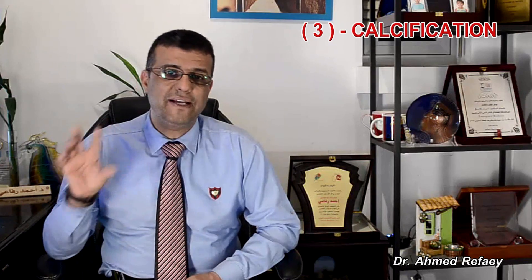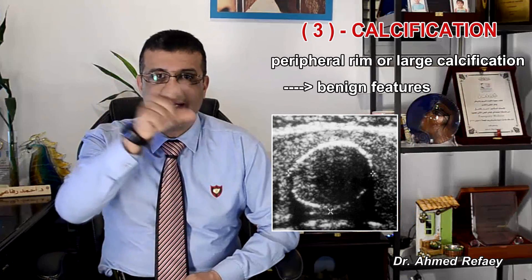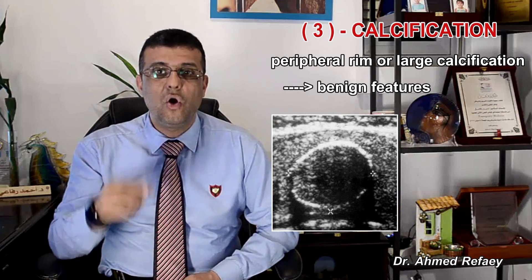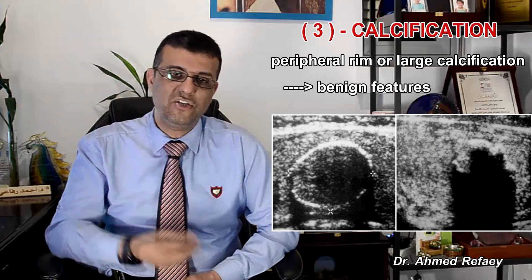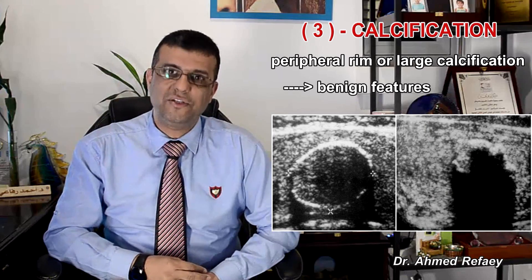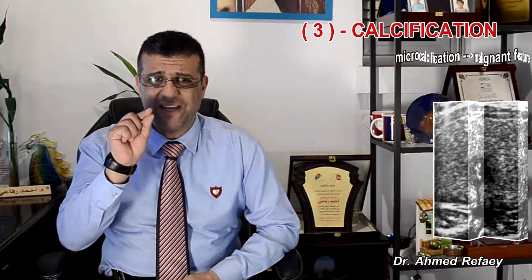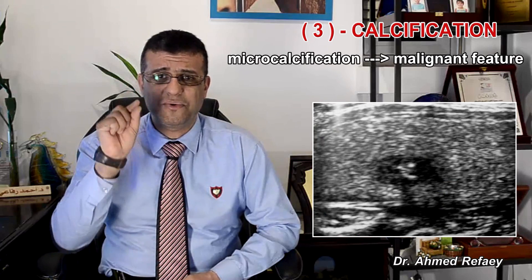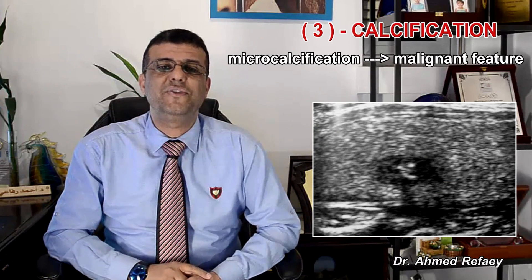Number three, calcification in the nodule. If calcification is present, peripheral rim calcification or large areas of coarse shadowing calcification are features of benign nodules, while fine punctate microcalcification are features of malignant nodules.